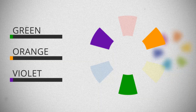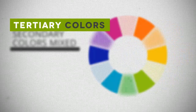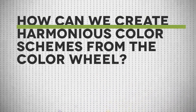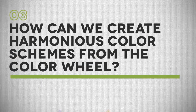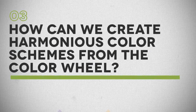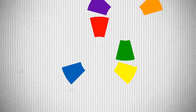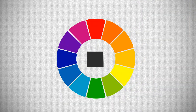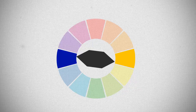Tertiary colors are created by mixing two colors — one primary and one secondary. How can we create harmonious color schemes from the color wheel? The relationship between colors is represented on a color wheel, where harmonious combinations are found.